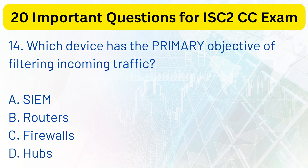Explanation. Among the options, only firewalls filter incoming traffic, while routers and hubs only receive and forward traffic. Security information and event management (SIEM) gathers data from the components of the information system.